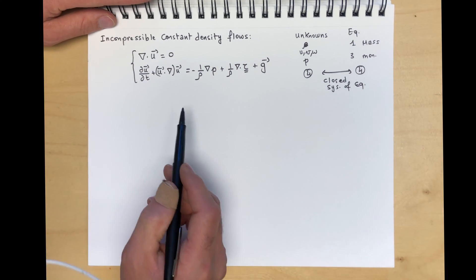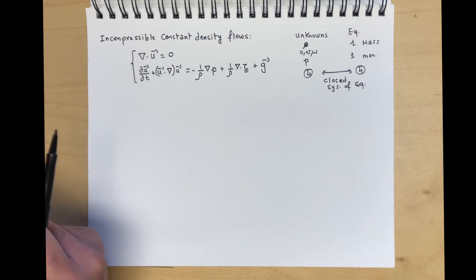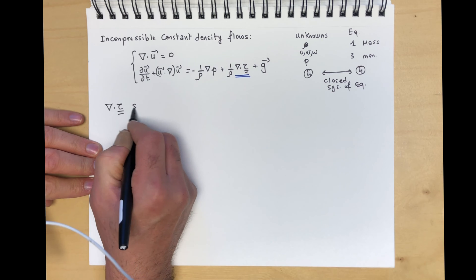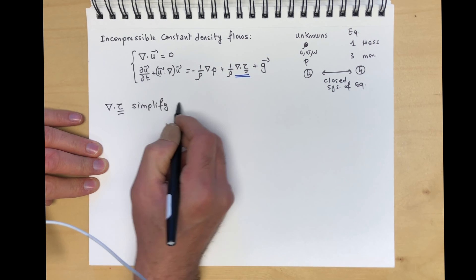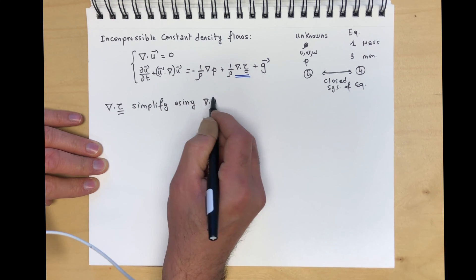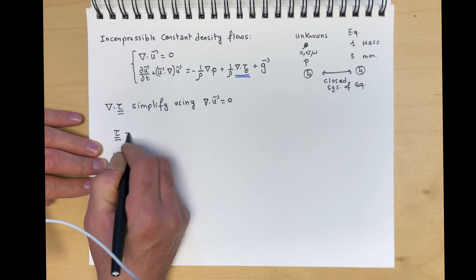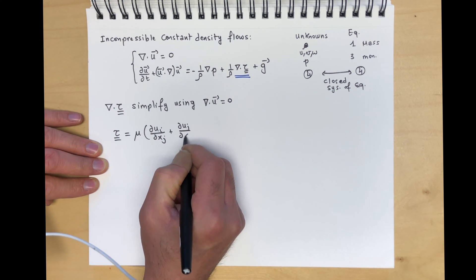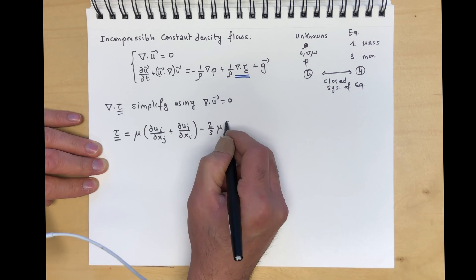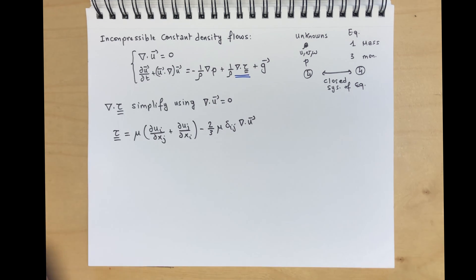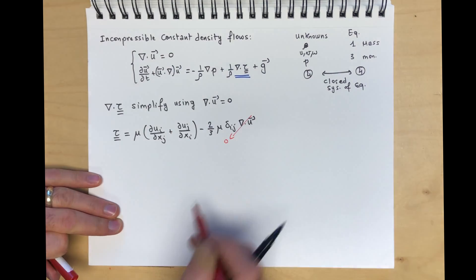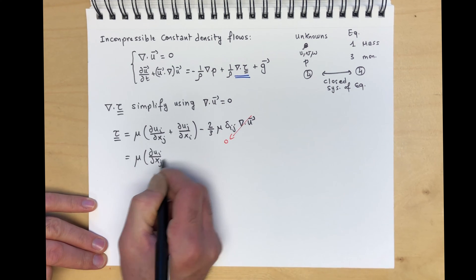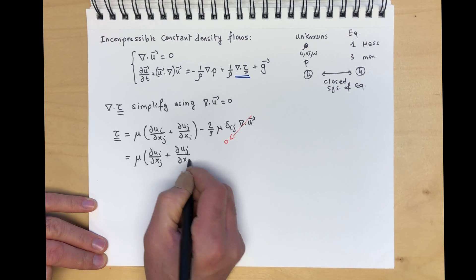These are the precursors to the Navier-Stokes equations. One thing we want to do is look at the div(tau) term and simplify it using div u = 0. We wrote tau as mu(du_i/dx_j + du_j/dx_i) - (2/3) mu delta_ij div u. Obviously, this last term is zero by virtue of the continuity equation. So tau simplifies to mu(du_i/dx_j + du_j/dx_i).